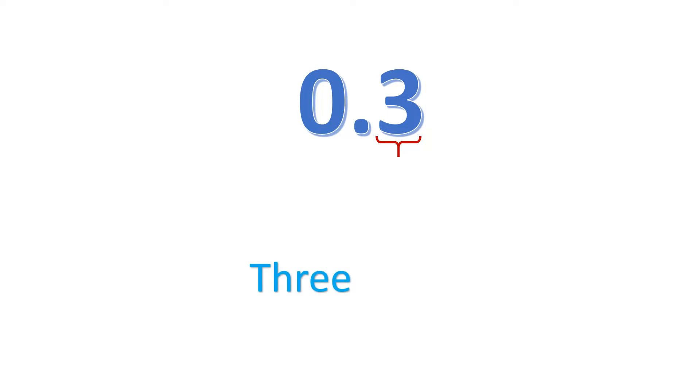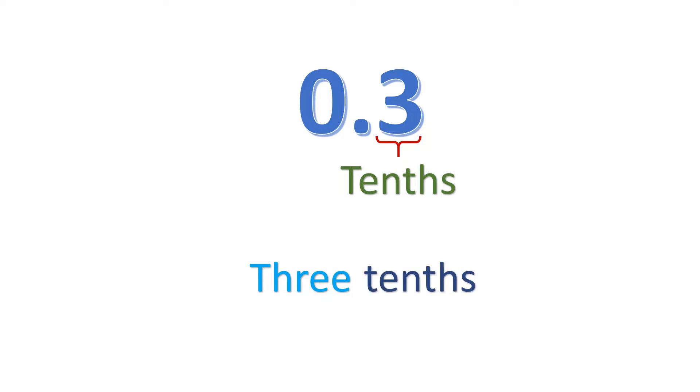For example, we have the decimal number 0.3. Observe that we have the number 3 at the right side of the decimal point. We're going to put the place value of this number. It is located in the tenths place, so it's 3 tenths.